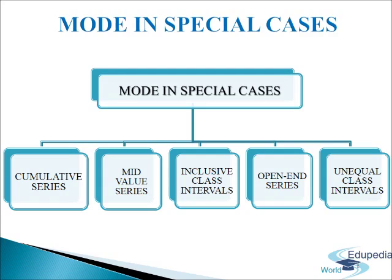The first special case is cumulative series, also called cumulative frequency distribution, which is less than or more than type. Next is mid-value series, in which mid-points of class intervals are given. Next are inclusive class intervals — classes of type 10 to 19, 20 to 29, and so on. Next is open-end series, where the lower limit of the first class and upper limit of the last class are not given. And the last is unequal class intervals, when class intervals are not equal.